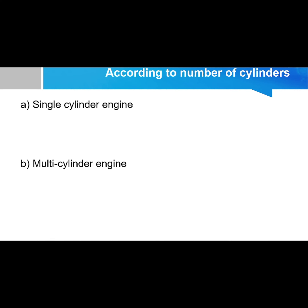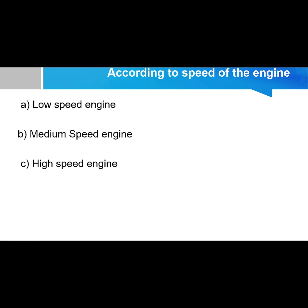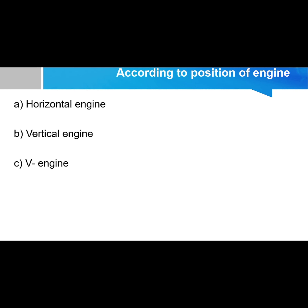Seventh, according to the number of cylinders: A single-cylinder engine contains only one cylinder, while a multi-cylinder engine consists of two or more cylinders. Eighth, according to the speed of the engine: types include low-speed, medium-speed, and high-speed engines. Ninth, according to the position of the engine: types include horizontal, vertical, and V engines.